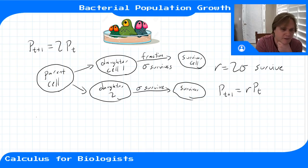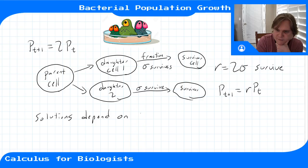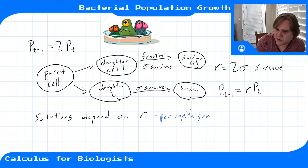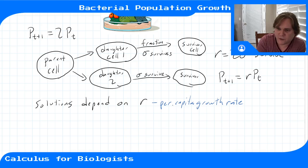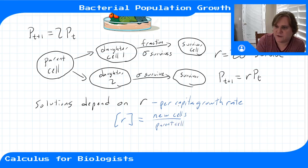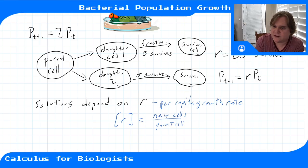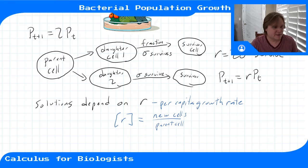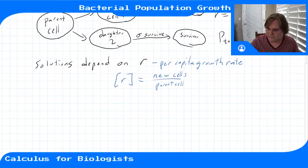Our model's behavior depends on r, which we call the per capita growth rate. When we go to other types of population models we'll still use a per capita growth rate. You can think of r's dimensions as new cells per parent cell — per capita means per unit of population — so r is the number of new cells produced per parent cell.